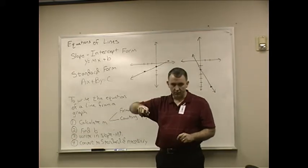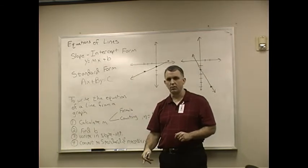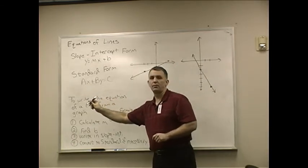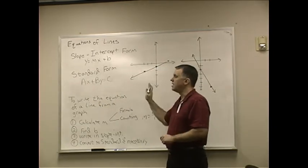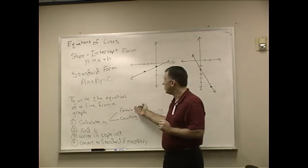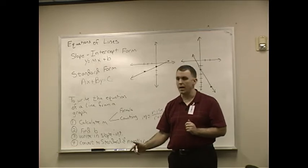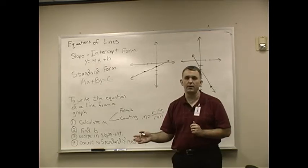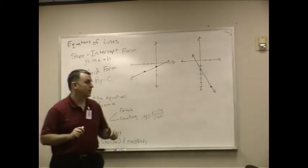So, how far up or down it goes versus how far across it goes. The rise, a positive rise would be going up. A negative rise would be going down. A positive run, which is the left-right, is going to the right. A negative run is going to the left. So, you can use the formula or you can count it either way, whichever you're most comfortable with. I'm going to do it both ways with these equations or with these lines to find the equation.